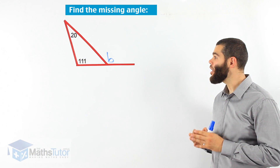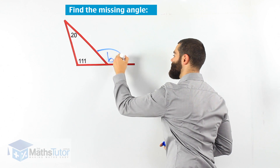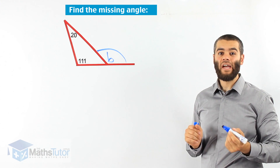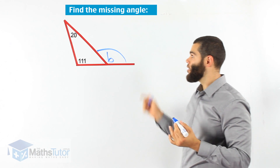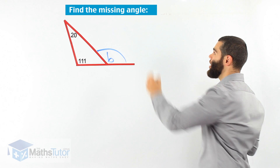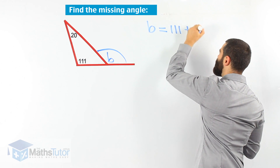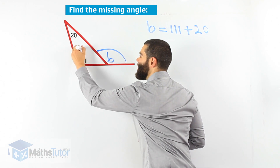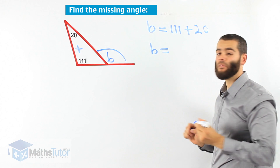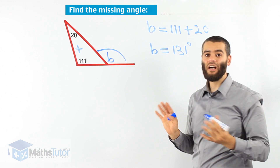We have another example — we're asked to find the exterior angle, which is marked with a B. The exterior angle is outside the triangle, that's why it's called exterior. We know that the exterior angle is the total of the two interior angles added together. So B equals 111 degrees plus 20 degrees, making the exterior angle 131 degrees.